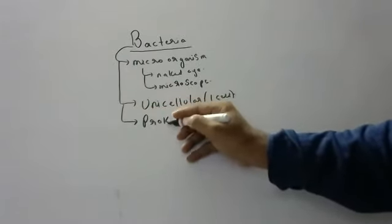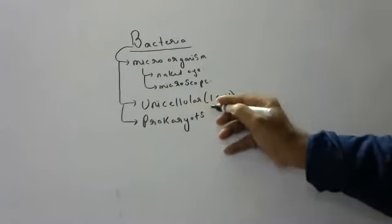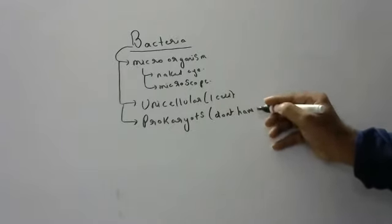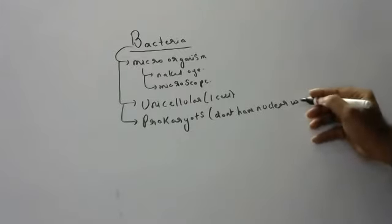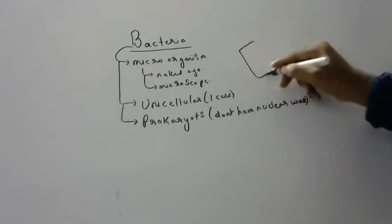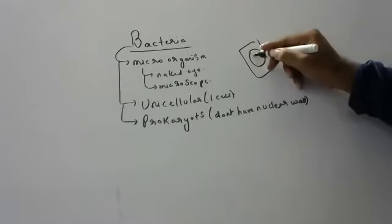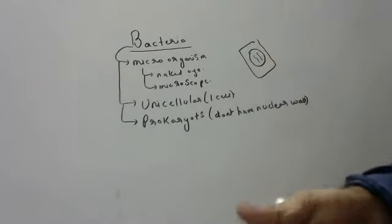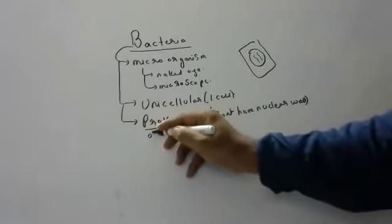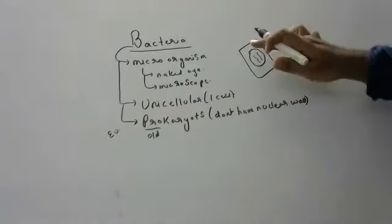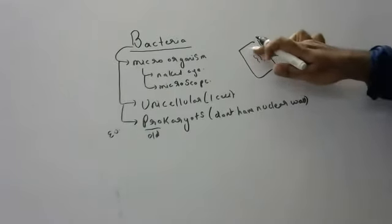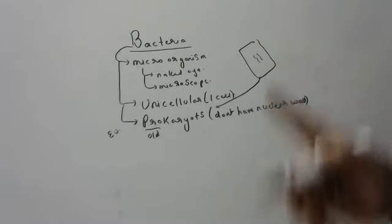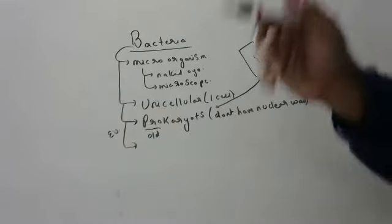Bacteria belong to prokaryotes. Prokaryotes are organisms which don't have a nuclear wall. In a eukaryotic cell the nucleus has a wall surrounding it — 'eu' means new, 'pro' means old. If the nuclear wall is absent, they are prokaryotes. Bacteria are prokaryotes and they are unicellular.